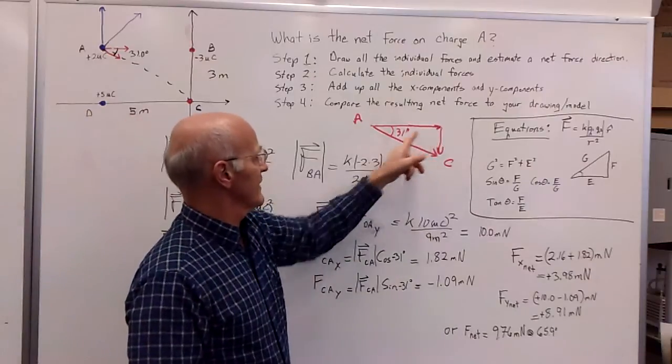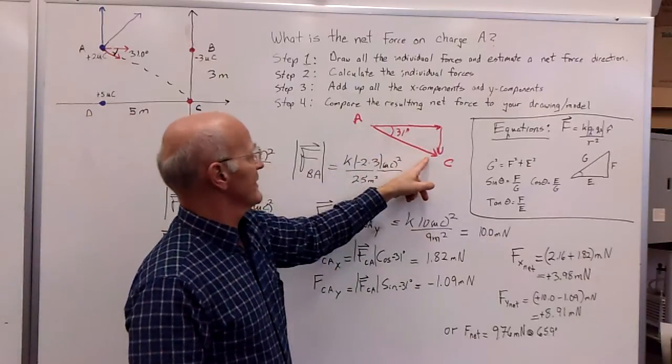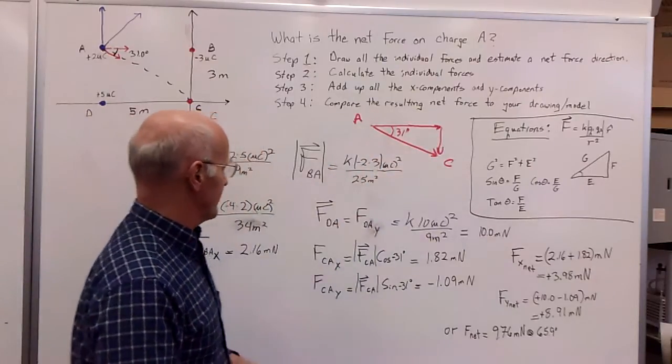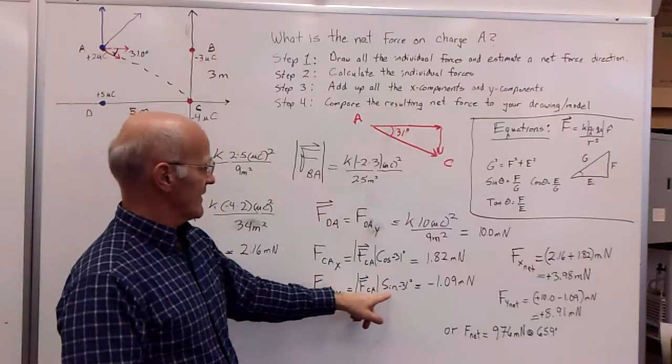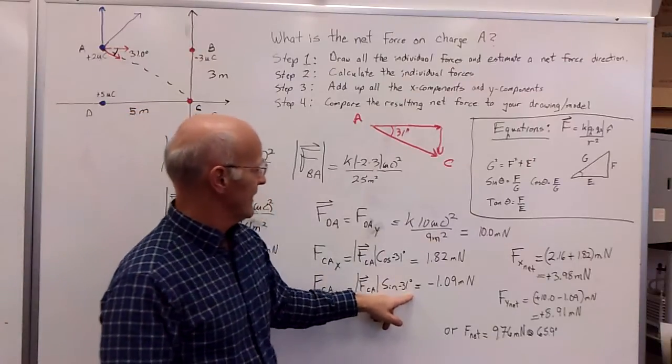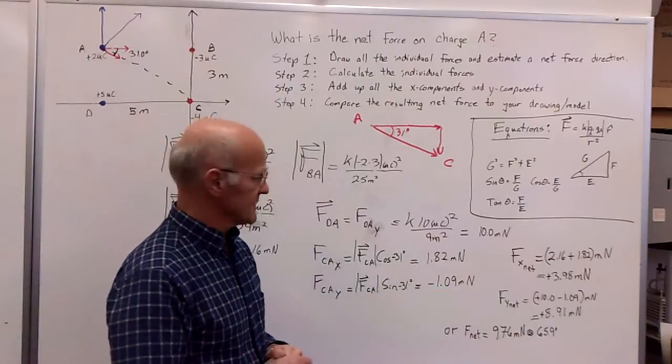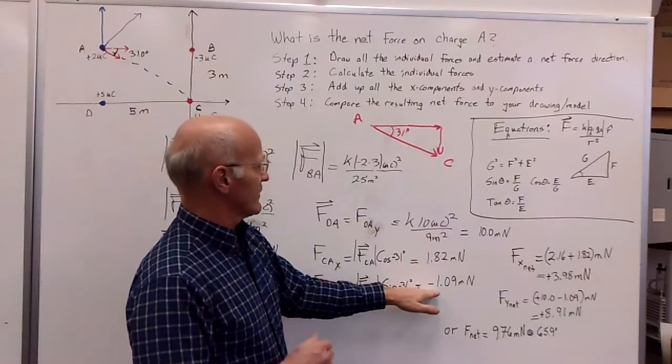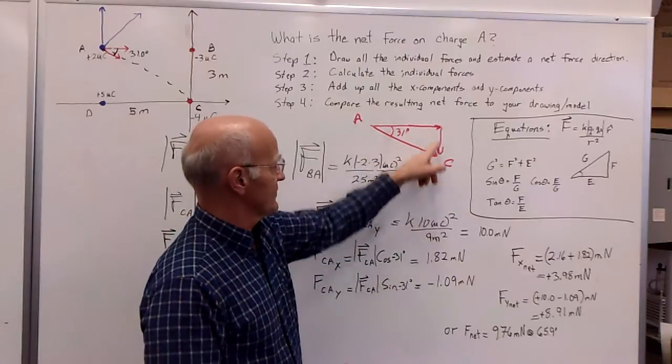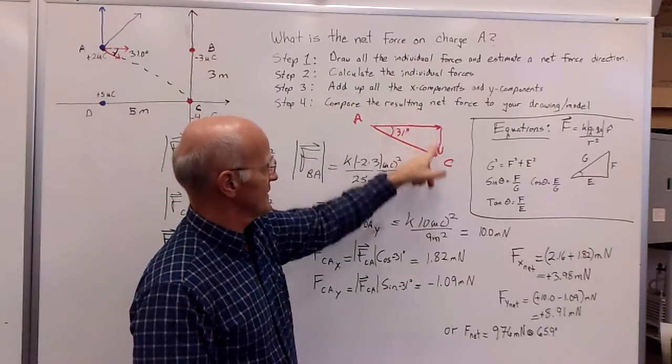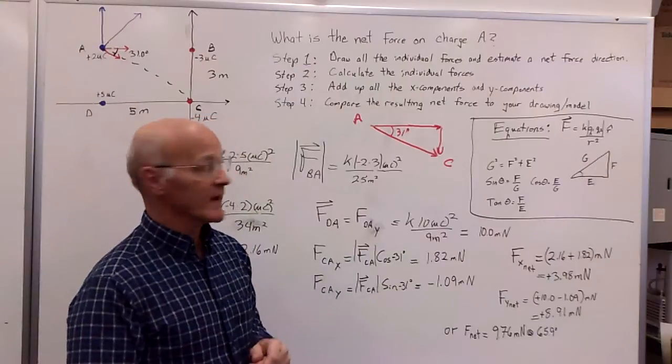And to get the Y component, we're just going to take this net force and take the sine of that angle times that net force, so that's where we get FCA times sine of negative 31, and that equals negative 1.09 millinewtons. So the negative sign is a good thing because we see that the force should be downward as well as to the right, and so we should get a negative Y component for that.